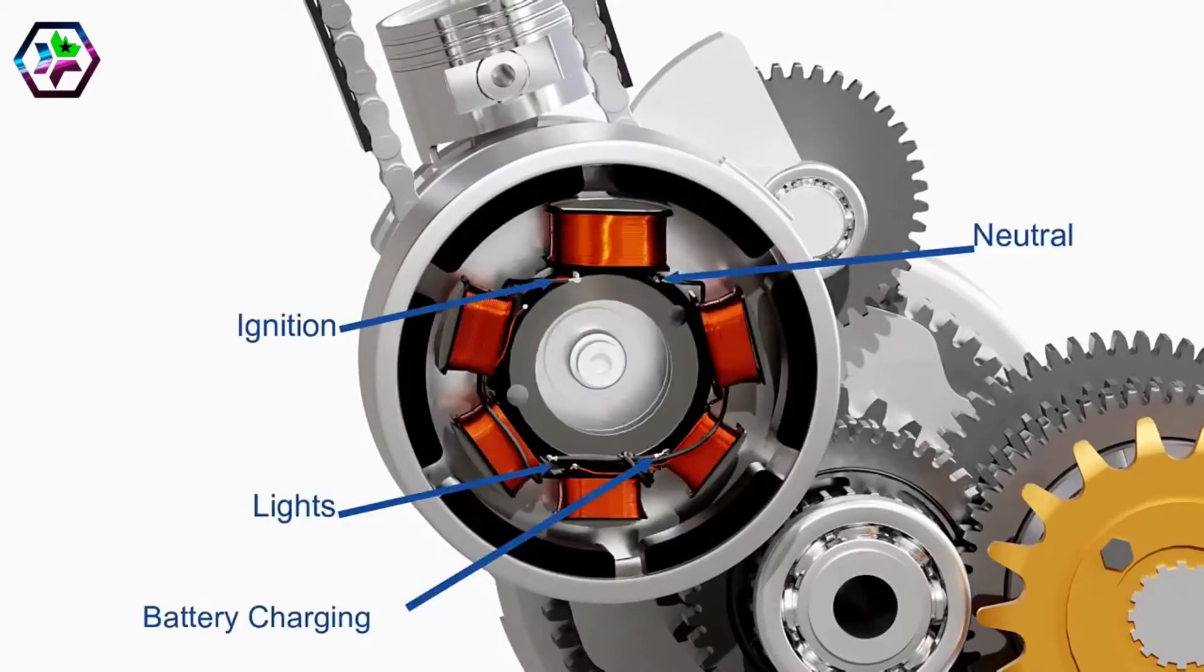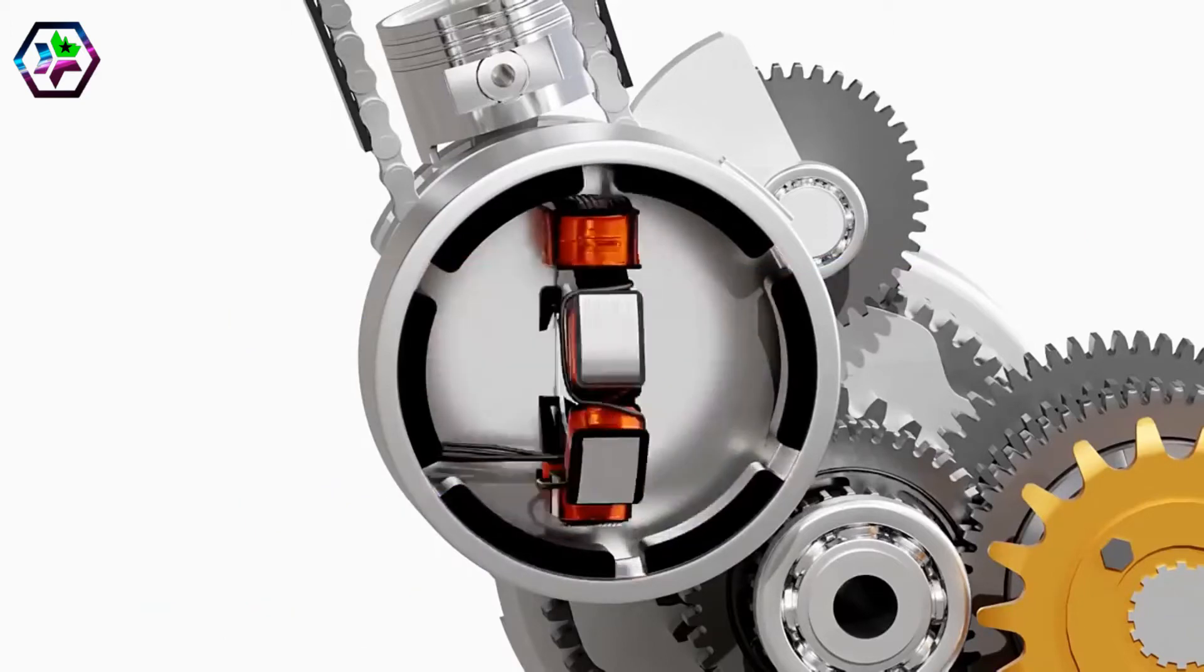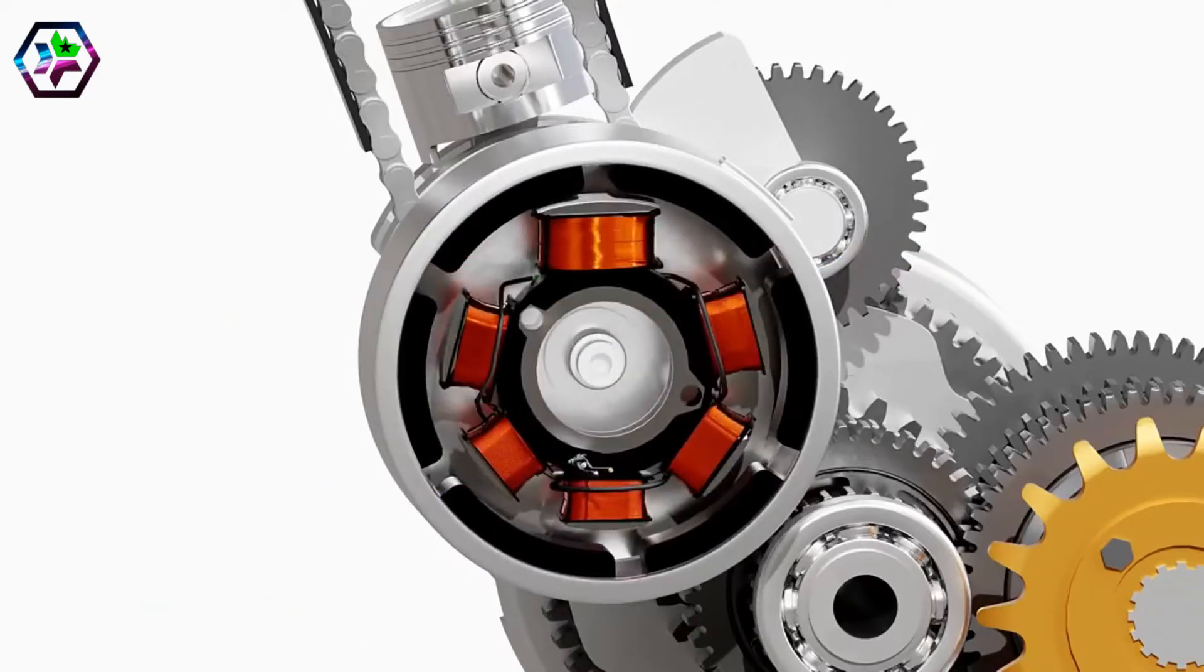Each output from the stator has different purposes, as shown here. The output for the ignition purpose is received from the exciter coil. This coil has a denser winding of thinner wire than the other coils to produce higher voltage for the ignition.